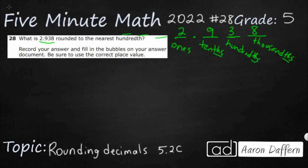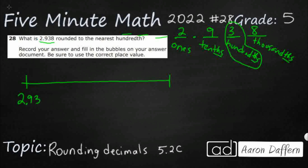So I need to round this to the nearest hundredths. What does that mean? Well, if we take a look at a number line — we're going to draw one here. Since I'm looking at the hundredths place, I'm going to use 2.93 as my first boundary number, and then take the next one up, 2.94, or 2 and 94 hundredths. Those are my boundaries. This 2 and 938 thousandths falls in between there.